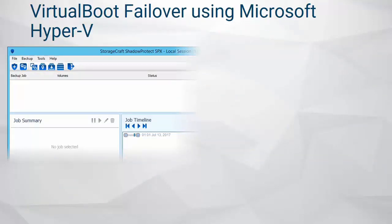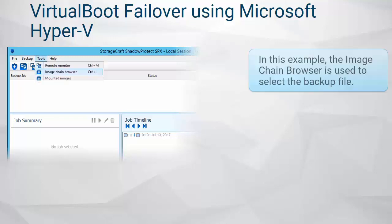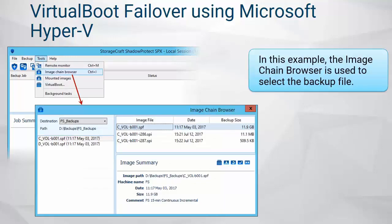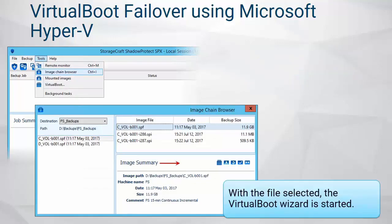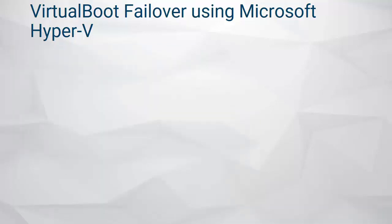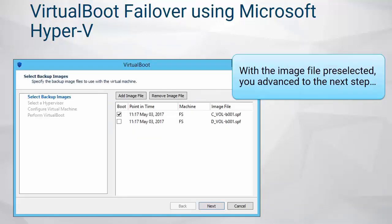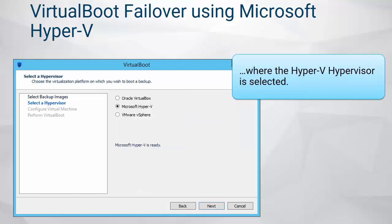With the Virtual Boot wizard started, follow these steps to virtualize a backup image. Select the backup image — depending on how Virtual Boot was started, the image may already be selected. Select the Microsoft Hyper-V hypervisor.